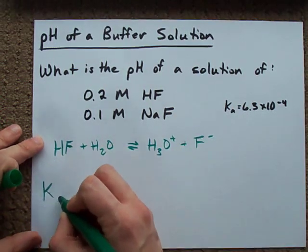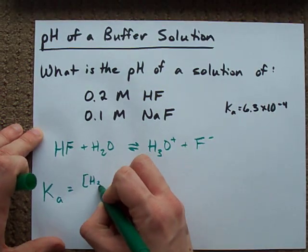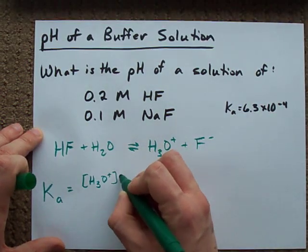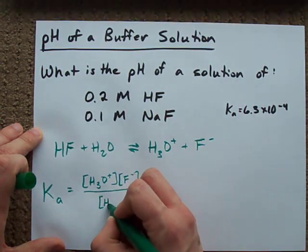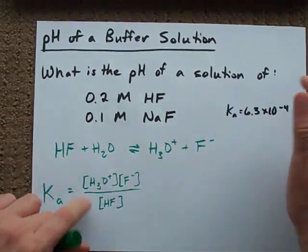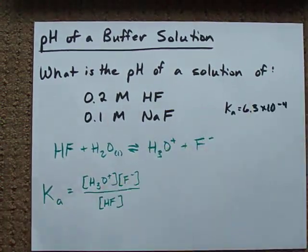That means my equilibrium expression, my Ka, is the concentration of H3O plus times the concentration of F minus, all divided by the concentration of HF. We don't include the H2O because it's liquid. All the other ones were aqueous.